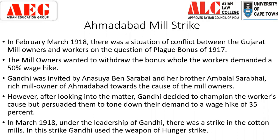The workers' demand was justified since the plague bonus had been taken away and they needed a salary increase. Further, this was wartime and there was a rise in the price of everything, meaning workers could not subsist on a meager salary. However, Gandhi felt that a 50% raise was too much, so he proposed settling at 35%, and all the workers agreed to it.